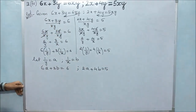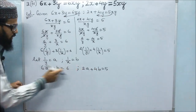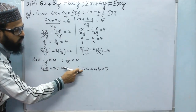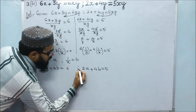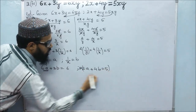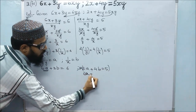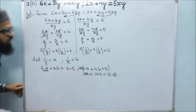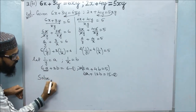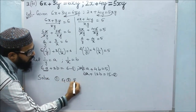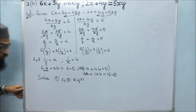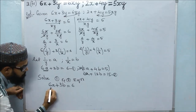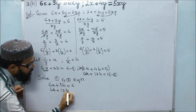To make the A coefficients equal, multiply the second equation by 3, since we have 6 and 2 as coefficients. Multiplying gives 6A plus 12B equals 15. Writing both equations: 6A plus 3B equals 6, and 6A plus 12B equals 15.